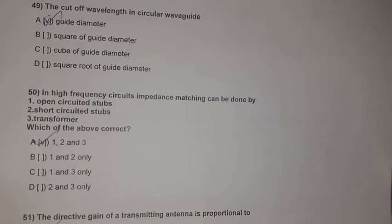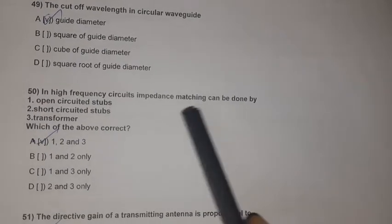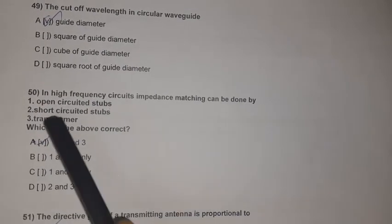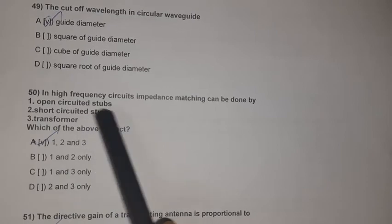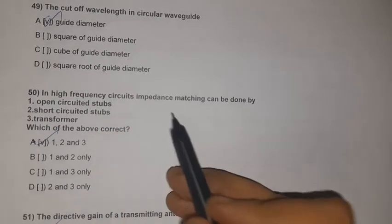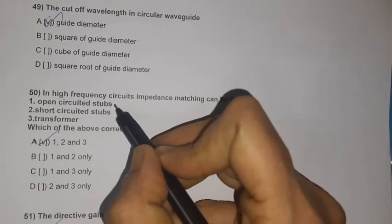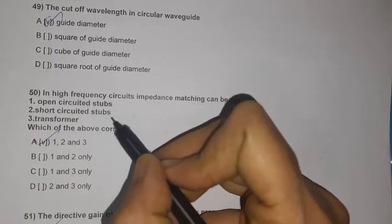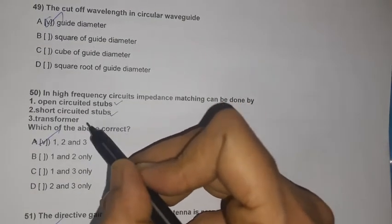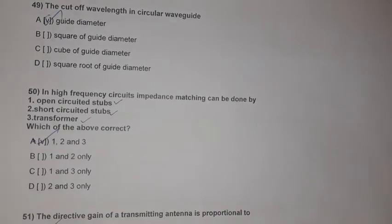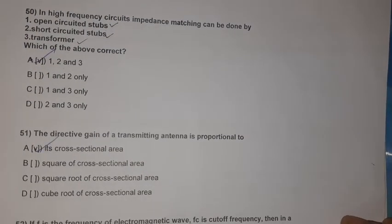Question 50: High-frequency circuit impedance matching can be done by open-circuit stubs, short-circuit stubs, or transformers — all of the above. Question 51: The directive gain of a transmitting antenna is proportional to its cross-sectional area.